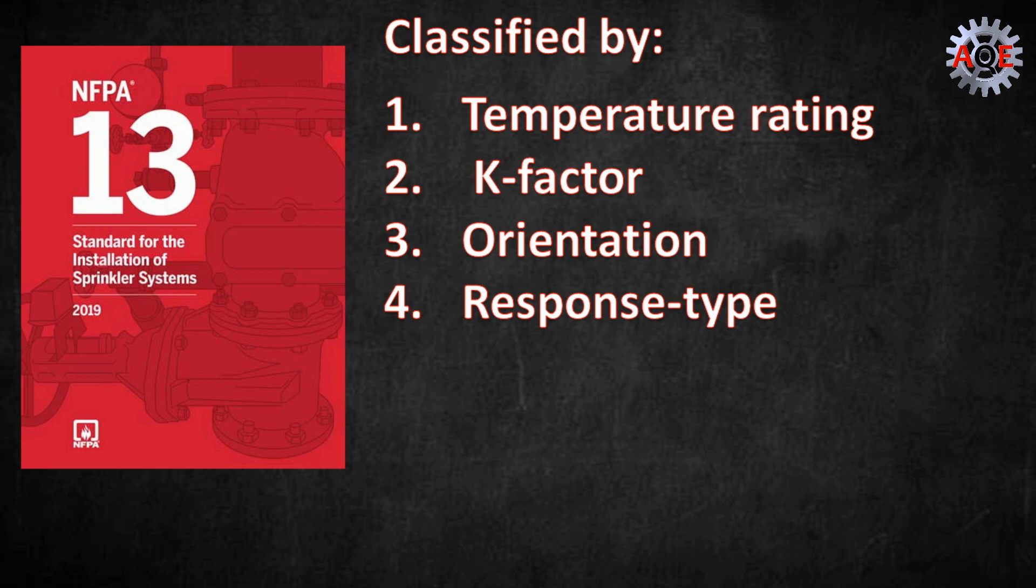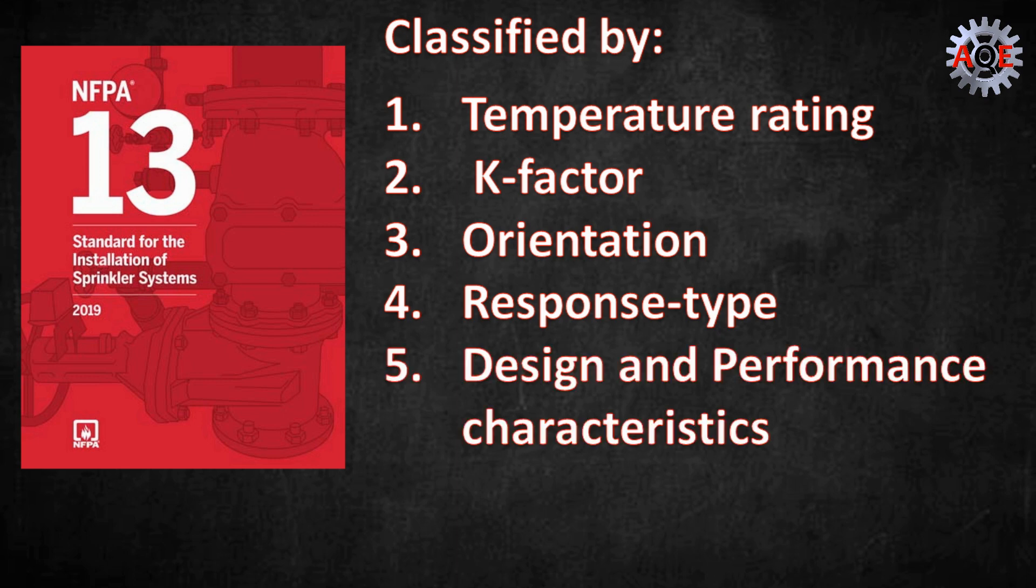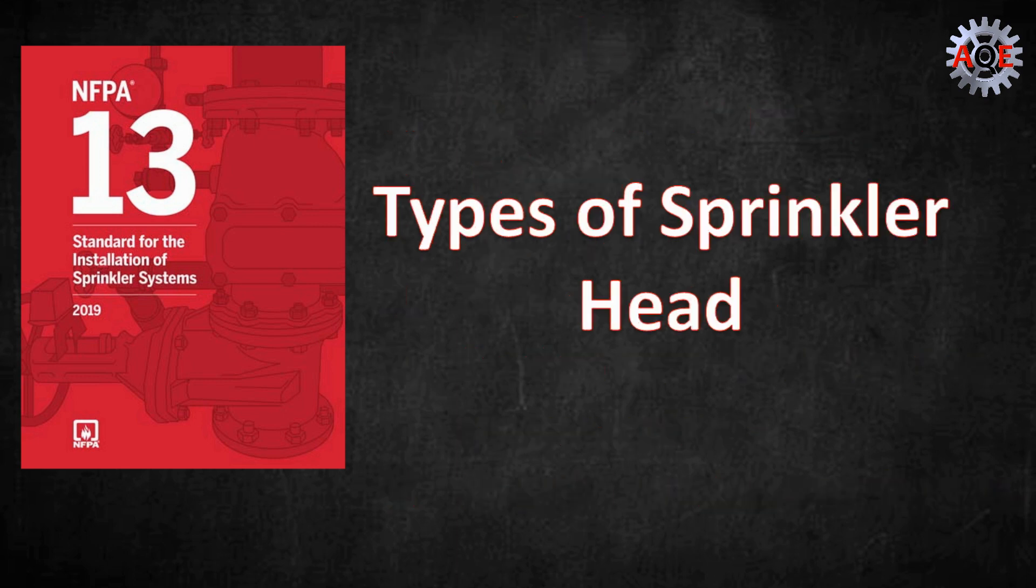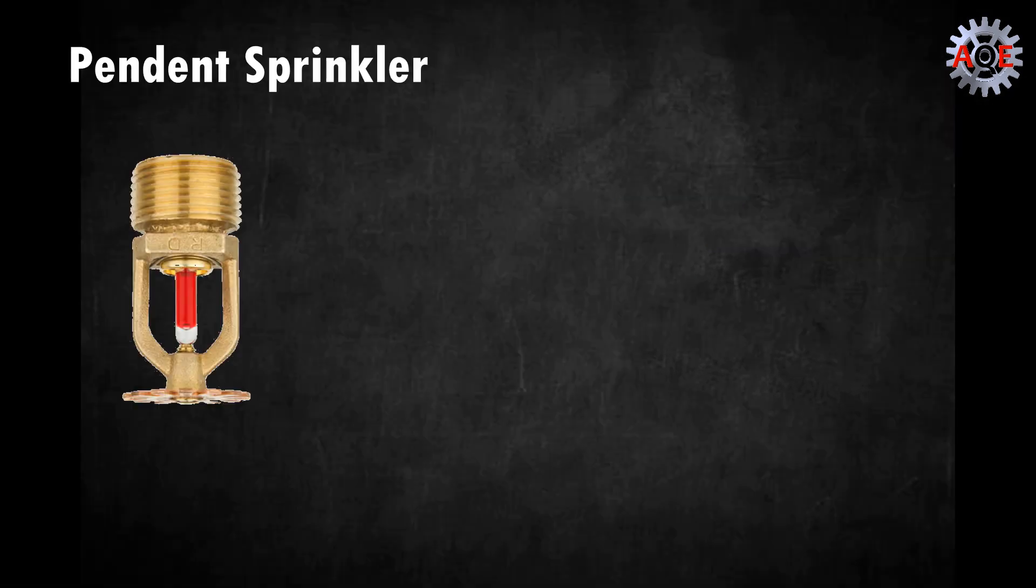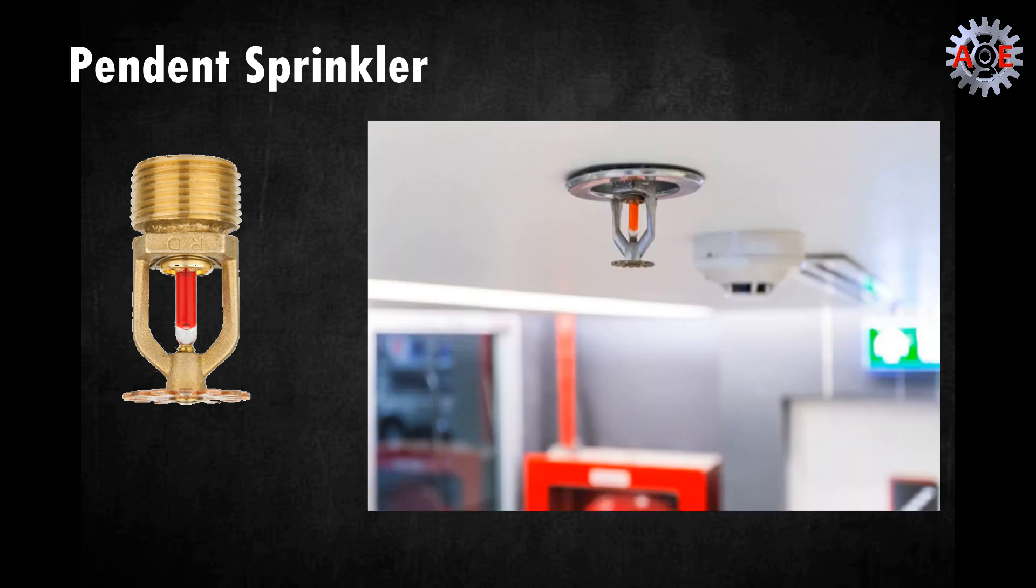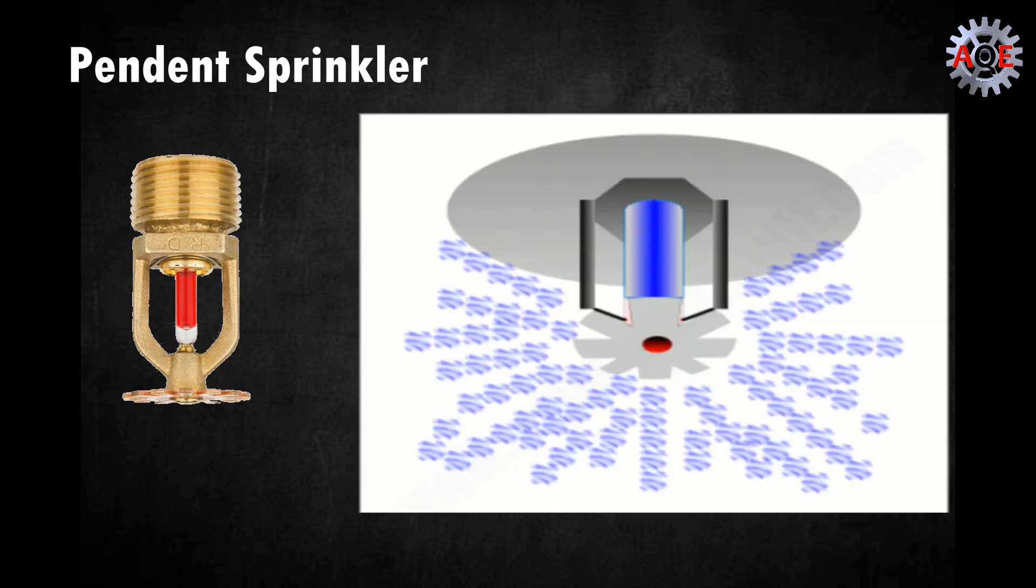There are four primary types of sprinkler heads for fire protection. Each one is specifically designed to extinguish fires and they come in a variety of temperatures, finishes, and sizes. The pendant fire sprinkler head is the most common type and it's mainly used in offices, hotels, and factories. It hangs down from the ceiling and sprays water in a circular motion to cover the most ground. The deflector, the metal piece at the end, is curved down in order to direct the water in a cone-shaped position.